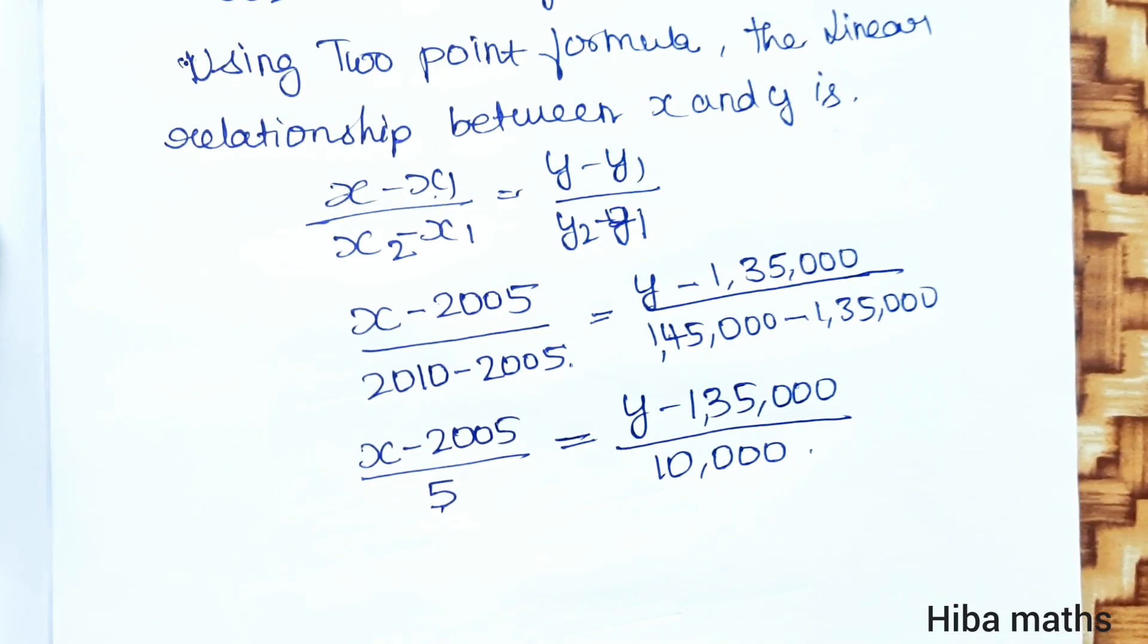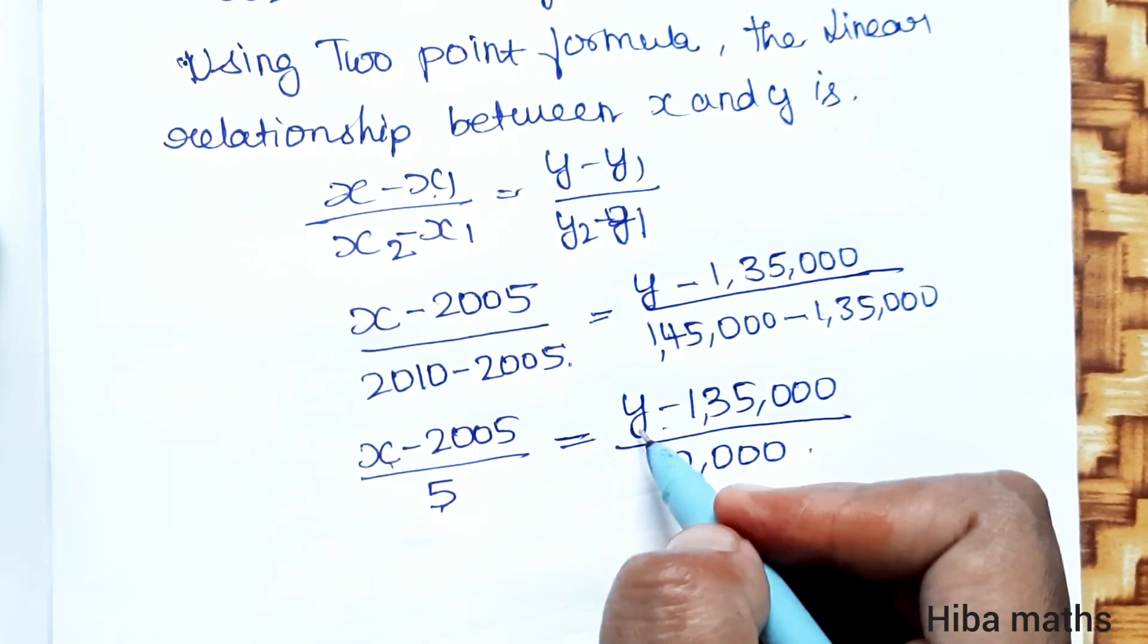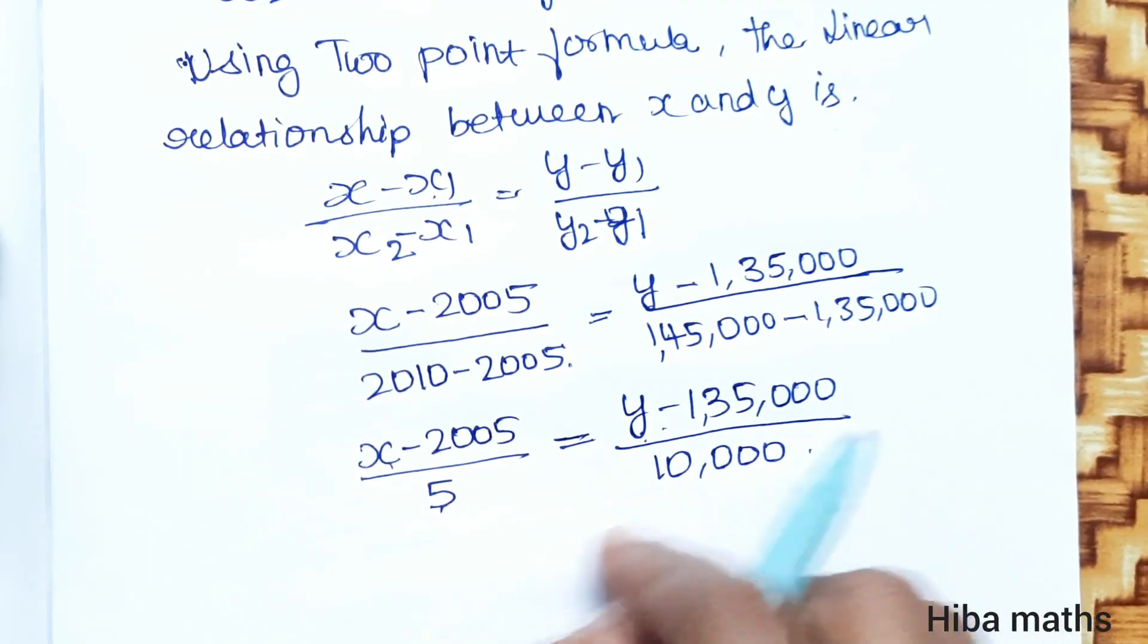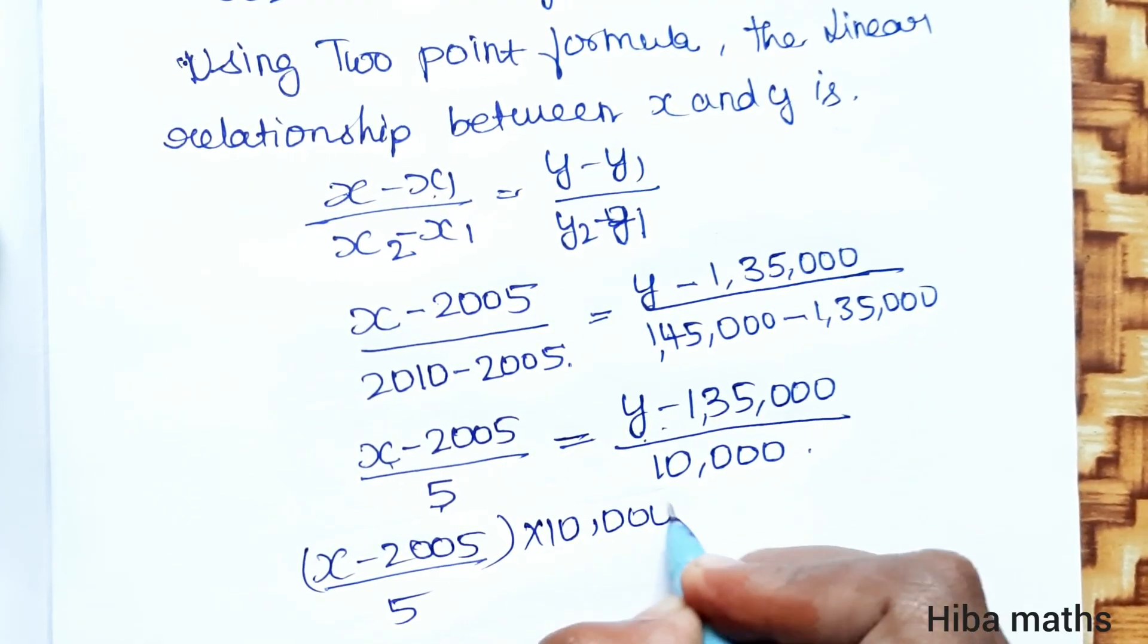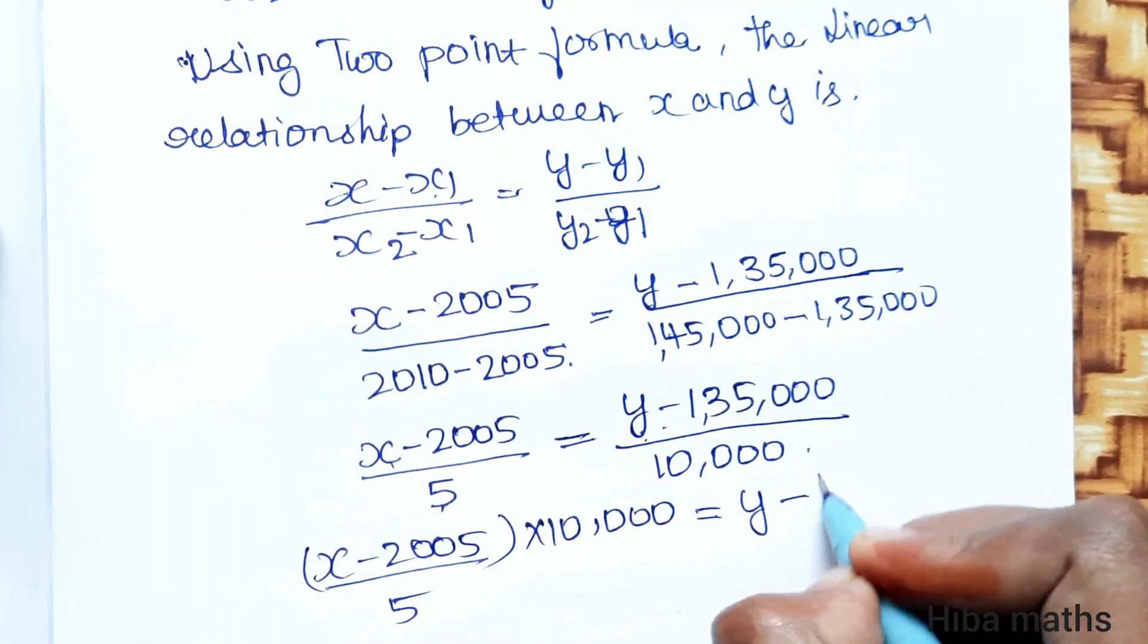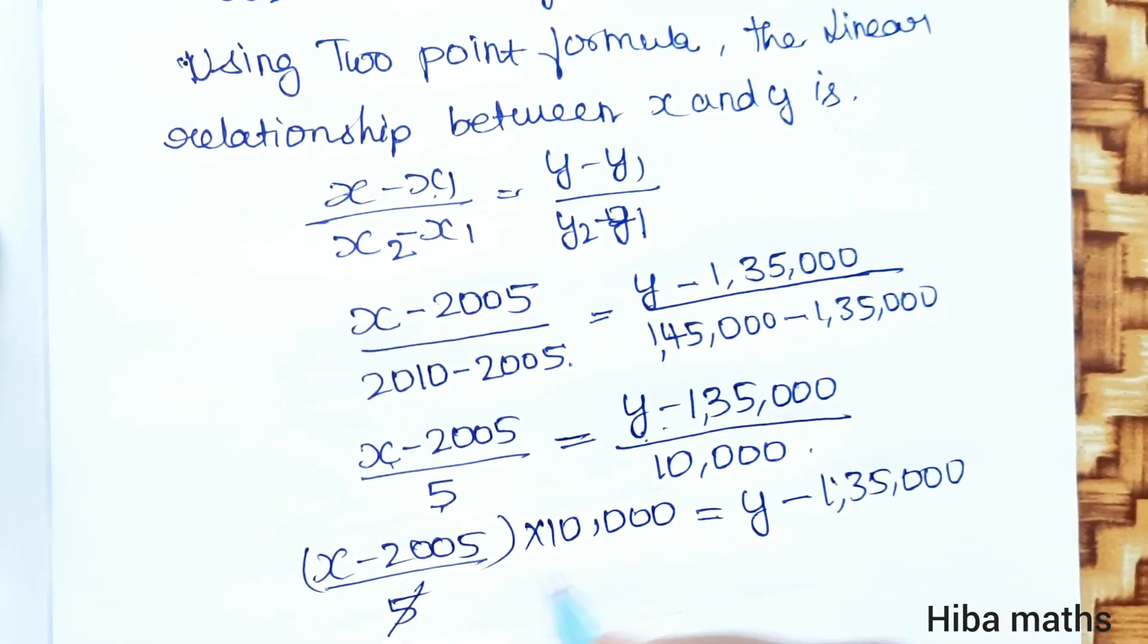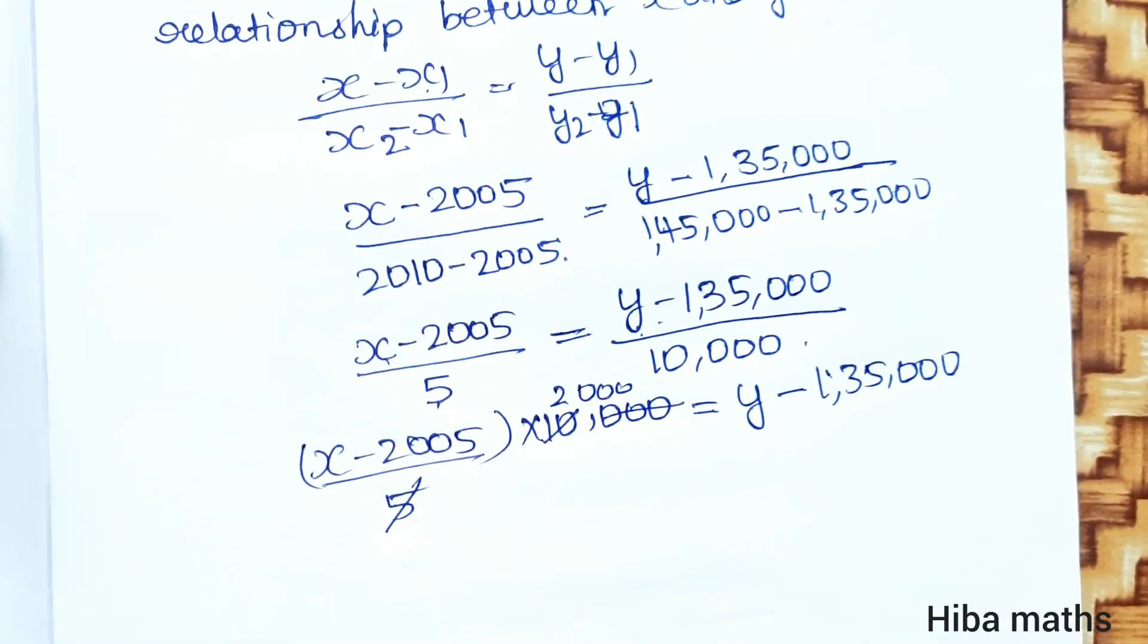Now we have to find the equation. Y is equal to what? Year and population, so y equals... We have to simplify. (x - 2005)/5 into 10,000 equals y minus 1,35,000.